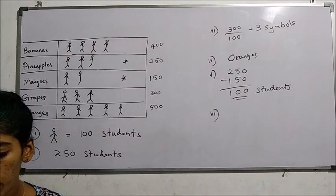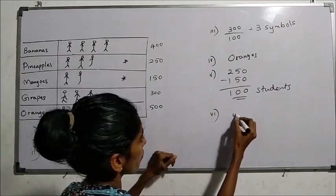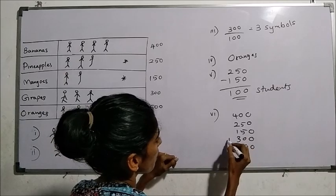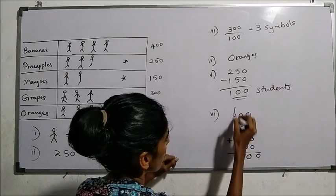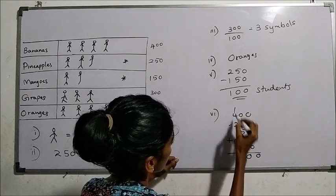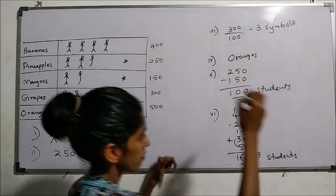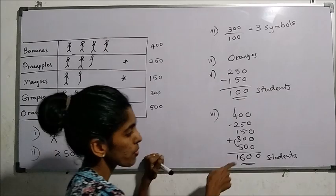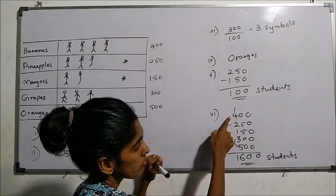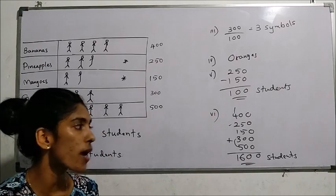Find the total number of students in this school. Add all values: 400, 250, 150, 300, 500. To add easily, form 10s: 5, 3, 8 — 8 plus 2 is 10, 10 plus 4 is 14, 15, 16 — so 1,600 students in total. Make 10s when you add.